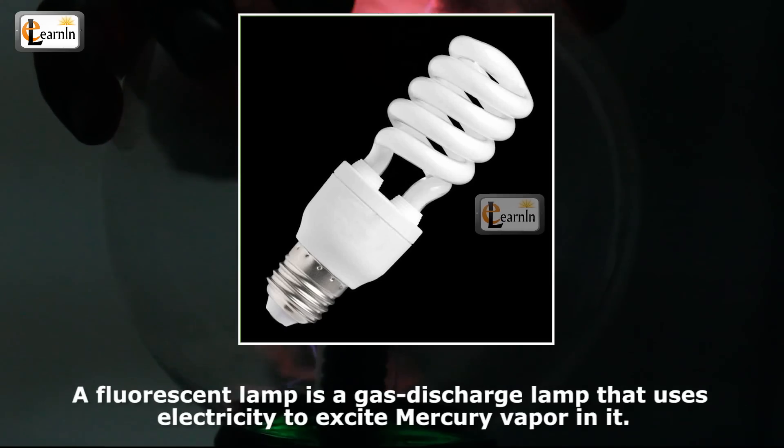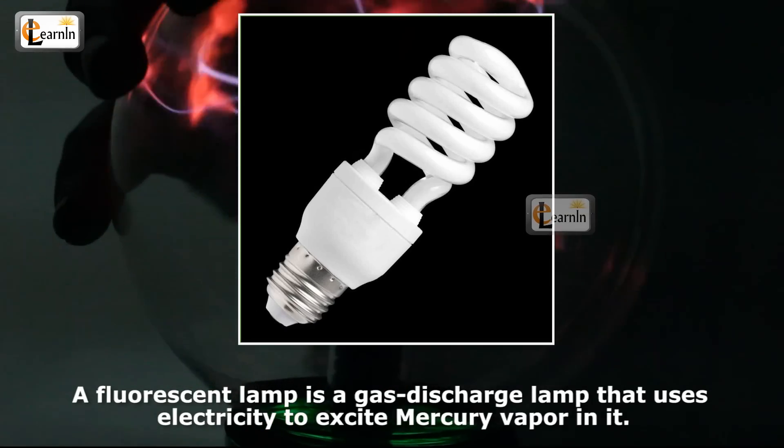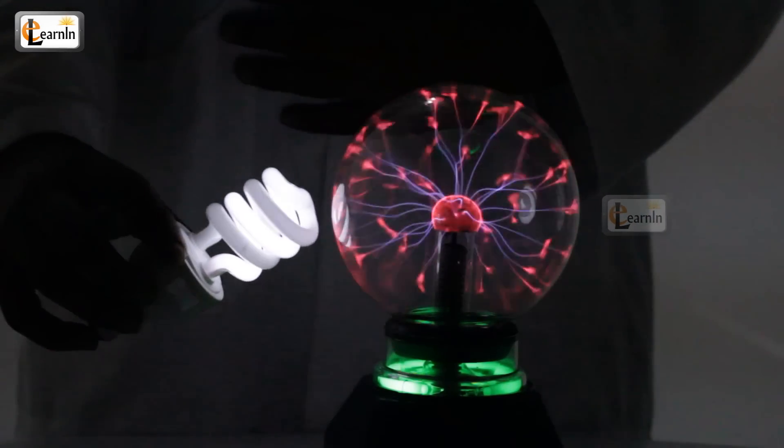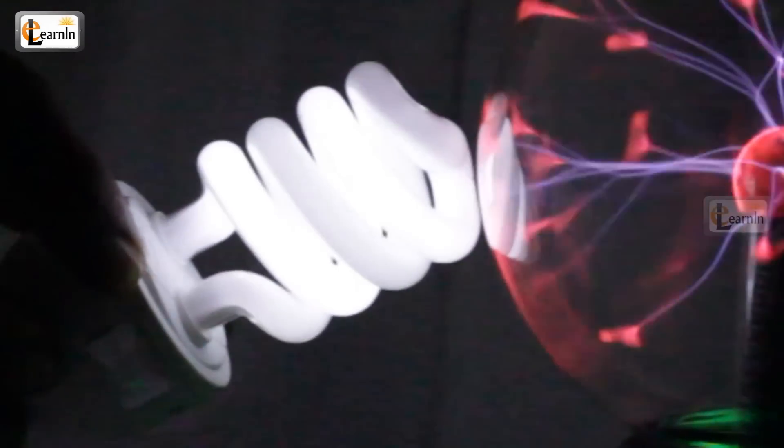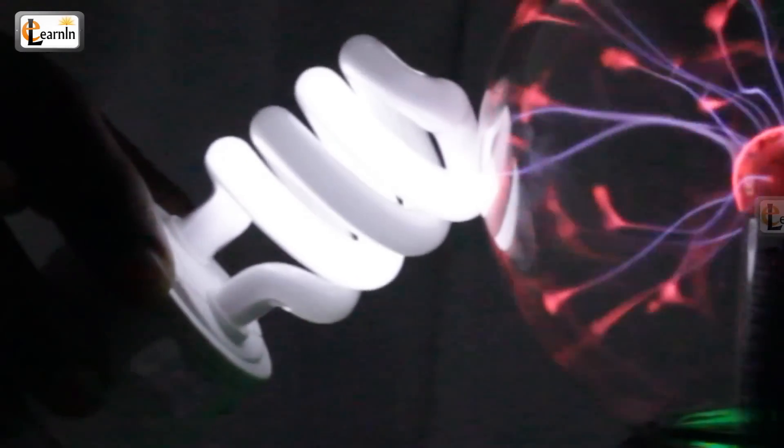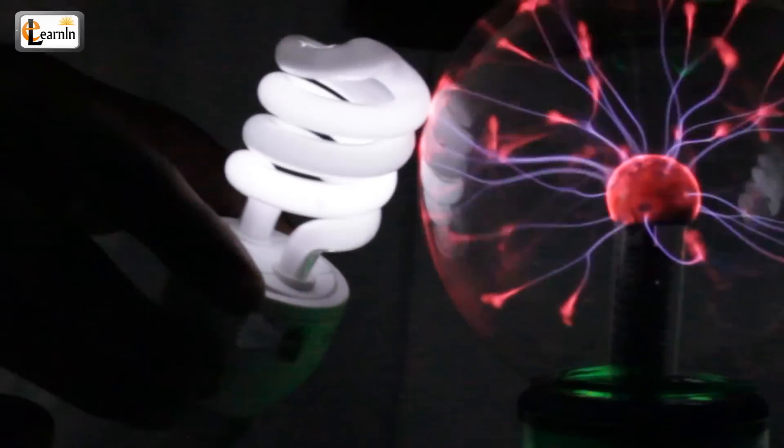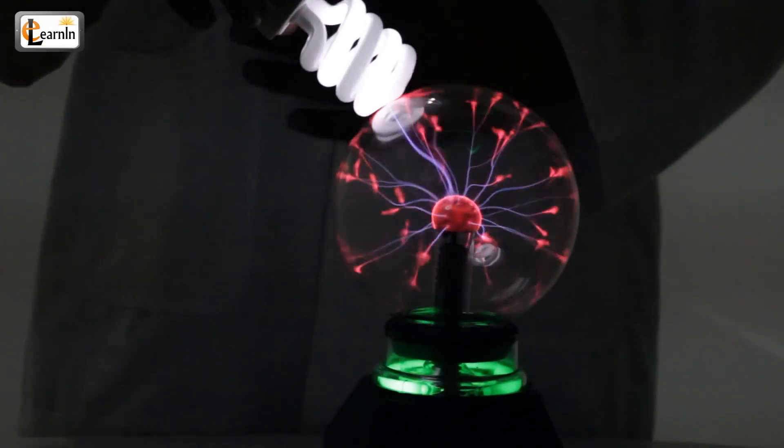When the fluorescent bulb is brought near the glowing plasma lamp, the high-frequency current reacts with the mercury present in the fluorescent lamp. The excited mercury atoms produce shortwave ultraviolet light.